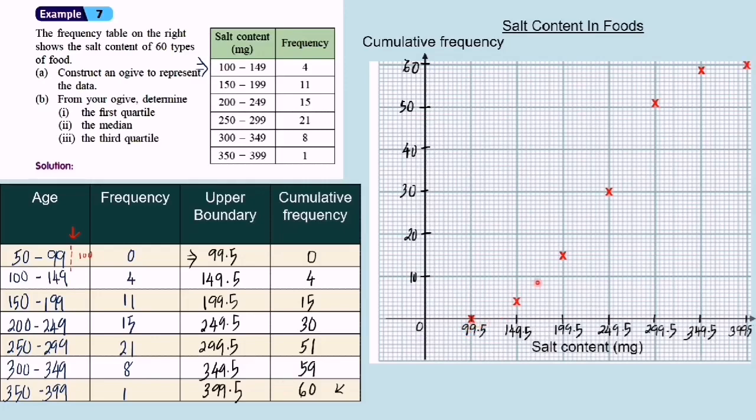After plotting all the points, you must use freehand to connect all the points. Now you can see, this is an ogive.